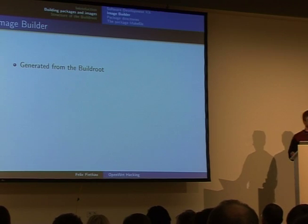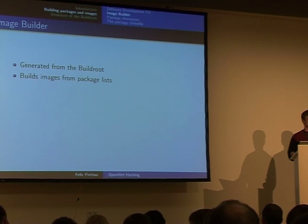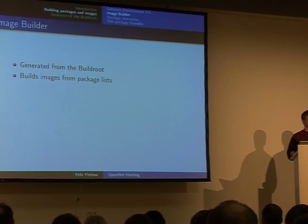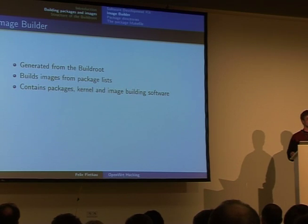The second tool is the image builder. It is also generated from build root but serves an entirely different purpose — it builds images from package lists. If you're using OpenWRT based on official releases and just want to add custom configuration files or packages, you can use the image builder to generate a fully working White Russian or Kamikaze-based image containing all your changes. It contains all the packages, the kernel, and the required tools for building the actual firmware images.